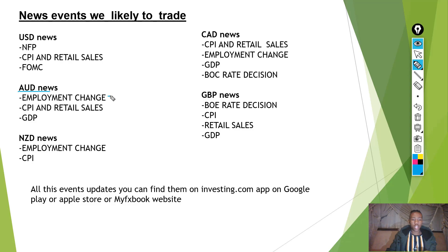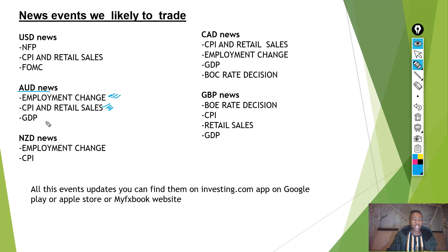Now let's go to the Australian — AUD — news. Firstly, we have the Employment Change, similar to USD news, focusing on how many people are working and unemployed to identify how many contribute to the Australian economy. Secondly, we have CPI and Retail Sales, focused on consumer spending. Lastly, we have the GDP — Gross Domestic Product — which represents all goods and services produced within a year.